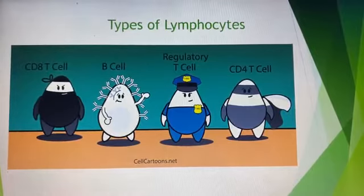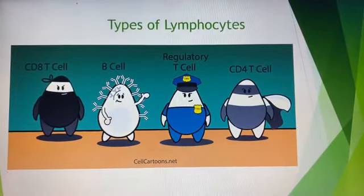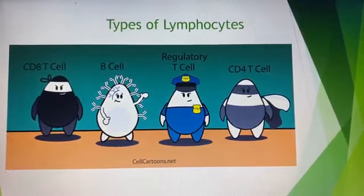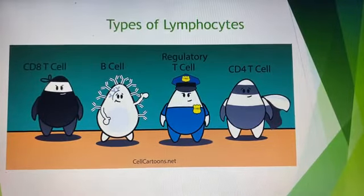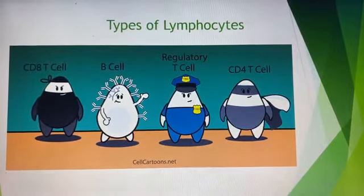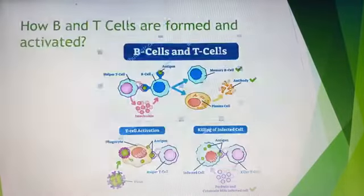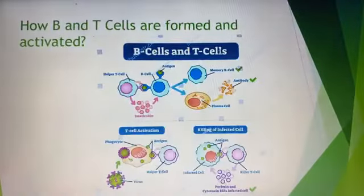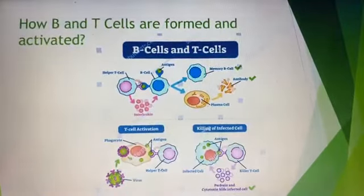The B cell originates and matures in the bone marrow, which is why it is called the B cell. These cells are distinguished by a Y-shaped protein on the surface known as the B cell receptor. This protein is specialized to recognize and attach to specific antigens.